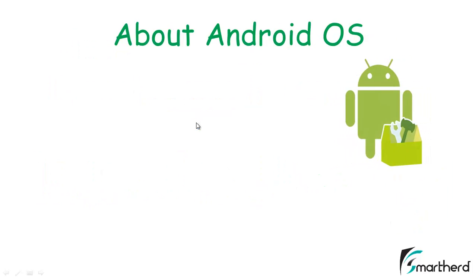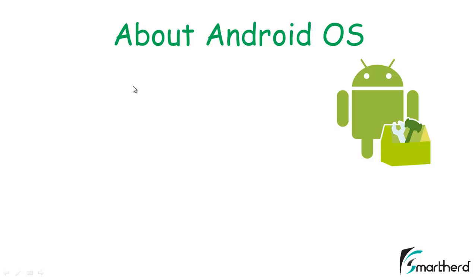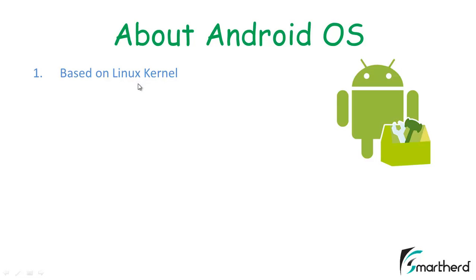So, what is Android OS all about? Android Operating System is actually based on Linux Kernel. Now the question arises, what is this Linux Kernel? It is actually a Unix-like operating system kernel which is open source and free. It's quite popular from a development point of view.